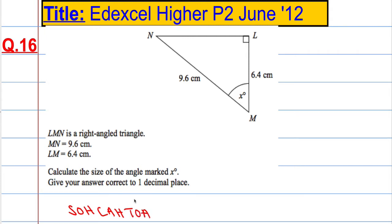So sine, cosine, tan. Let's label our triangle in relation to this angle.